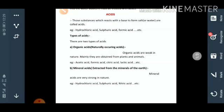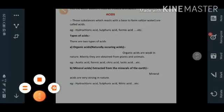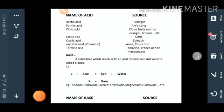Students, this table is very important for the examination point of view. And you see in the first side name of acid and in the second side of its source. So the source of acetic acid is vinegar, the source of formic acid is ant sting, citric acid is found in citrus fruit such as oranges, lemons.